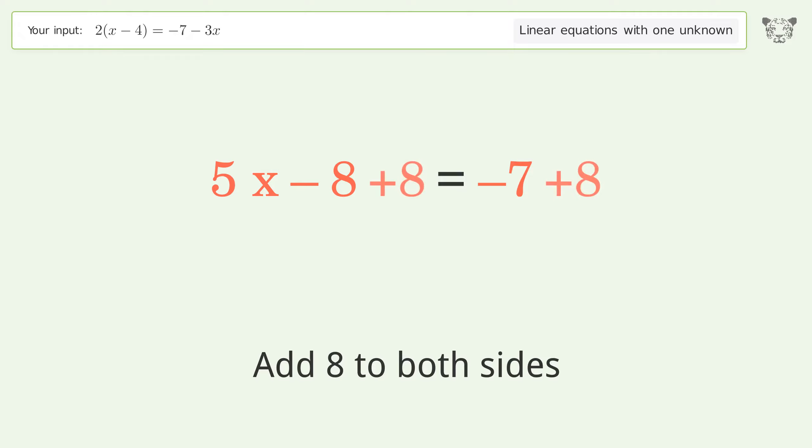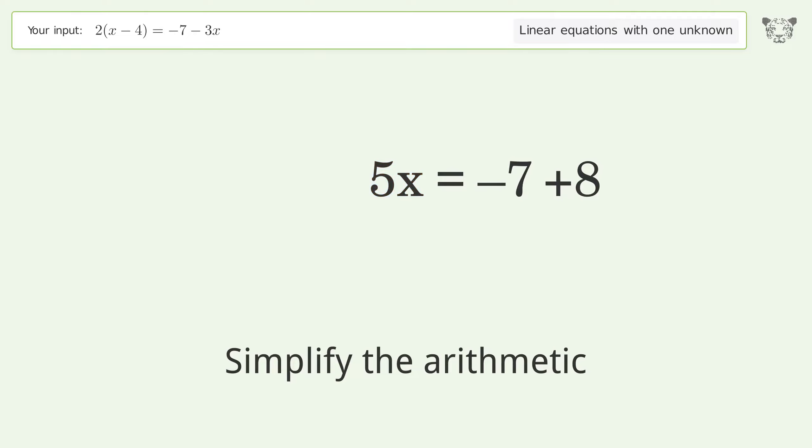Group all constants on the right side of the equation. Add 8 to both sides. Simplify the arithmetic.